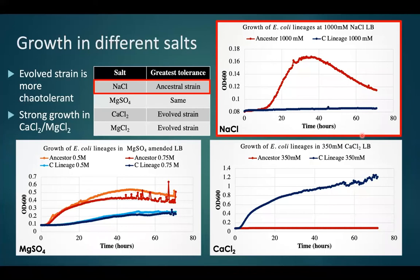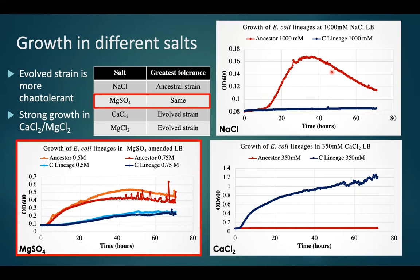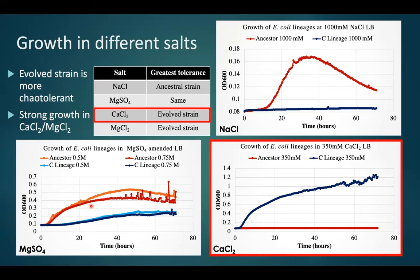I was curious whether strains had a more universal solute stress tolerance or a very specific magnesium chloride adaptation. The evolved strain was more chaotolerant overall. In sodium chloride, the greatest tolerance was surprisingly with the ancestral strain, indicating a very specific adaptation. In magnesium sulfate brines, the ancestor grew to higher cell densities than the evolved lineages. However, with calcium chloride, the evolved lineage showed the same trend as with magnesium chloride — strong growth at 350 millimolar — while the ancestor never achieved growth. This told us the cells have a very specific chloride adaptation.